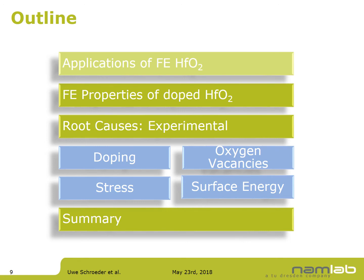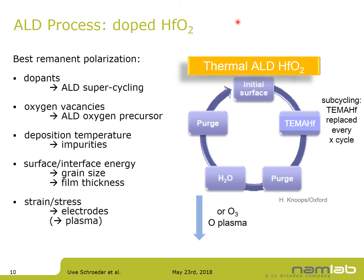Moving to ferroelectric properties of doped hafnium oxide: we use atomic layer deposition (ALD) to deposit doped hafnium oxide layers, though sputter deposition, sol-gel, and pulsed laser deposition are also possible. The ALD process is a two-step cycling process: deposit the metal precursor — typically tetrakis(dimethylamido)hafnium (TDMAHf) — purge, oxidize the precursor to form hafnium oxide, purge out the oxidant, then repeat the cycle.